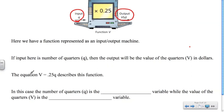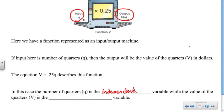We can write an equation for this: V is equal to 0.25 times Q. This describes the function. The number of quarters, Q, is the independent variable, because the value of the quarters is dependent on how many quarters we have — not the other way around. So number of quarters is the independent variable, while value of the quarters is the dependent variable, because it depends on how many quarters we have.